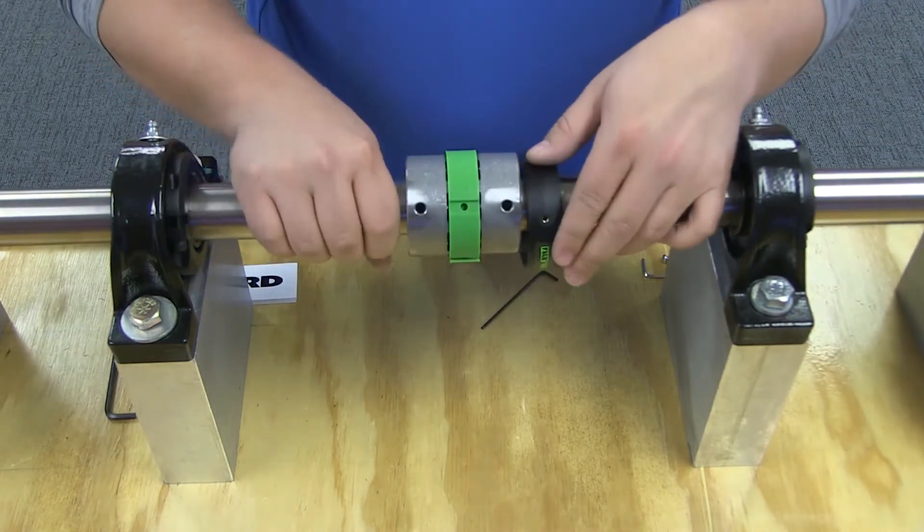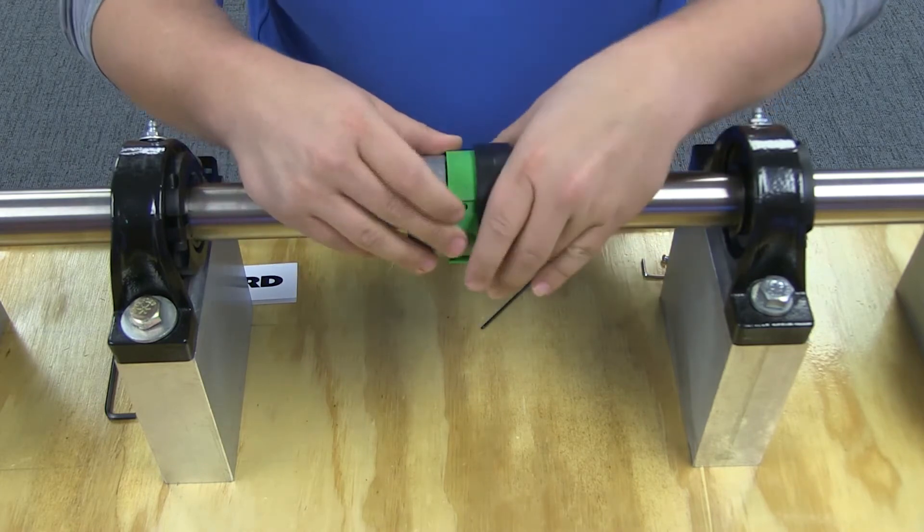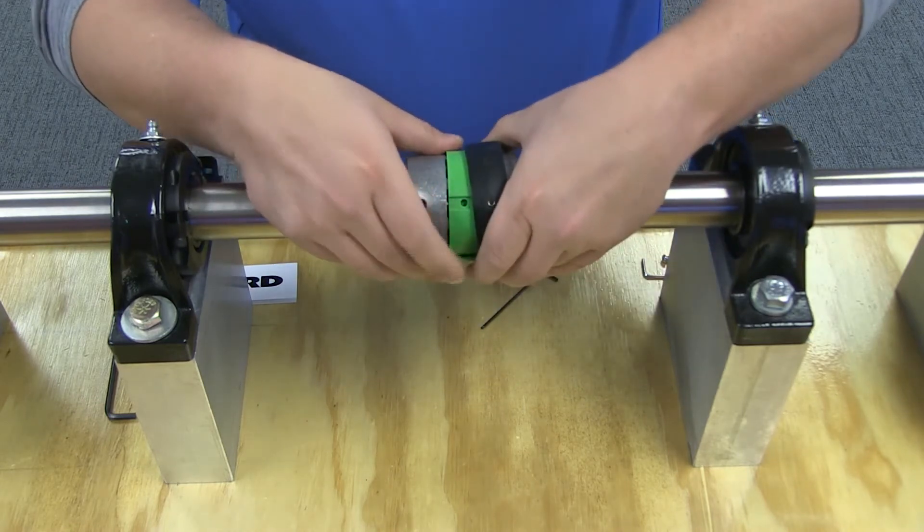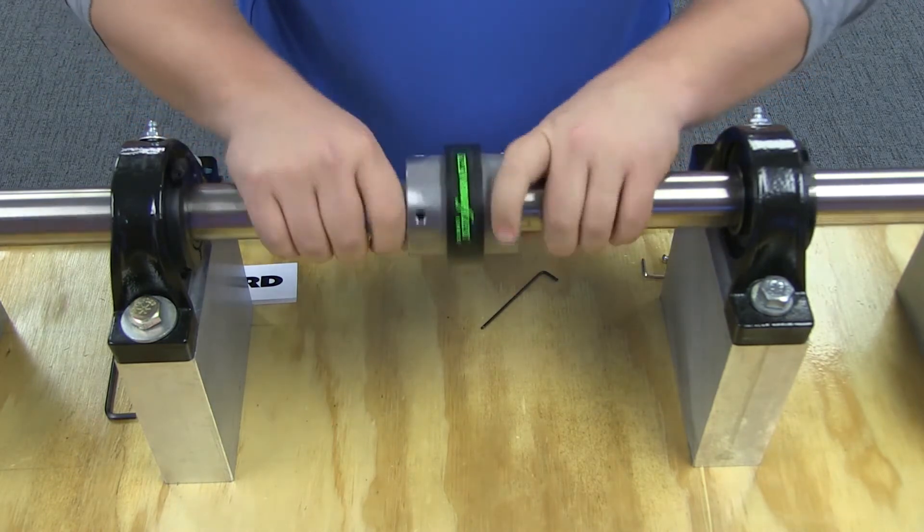To install the cover, move the cover alongside the element with the fastener hole of the cover approximately aligned with the locating slot on the element. A soft mallet may be needed to install the cover on larger sized couplings.